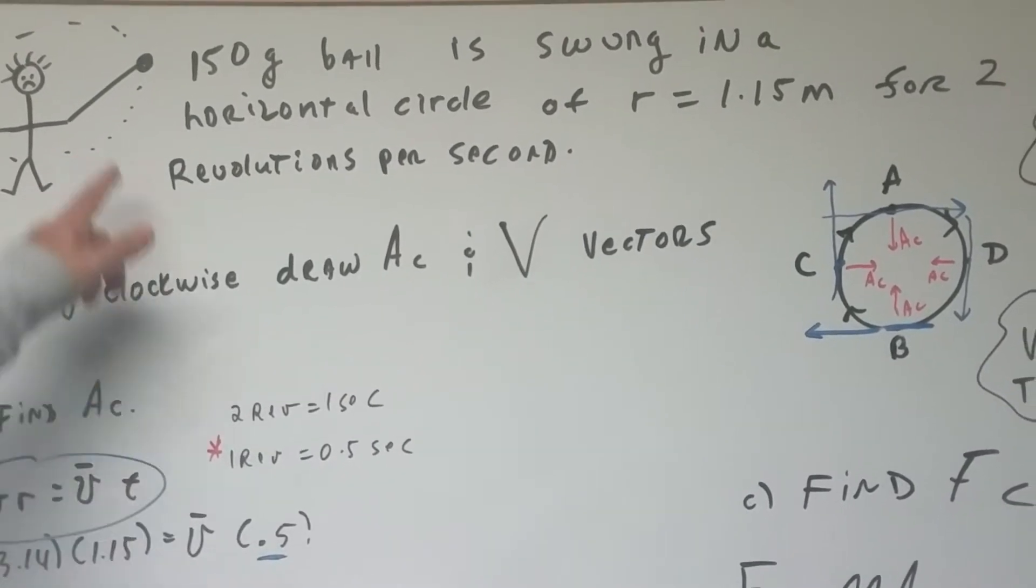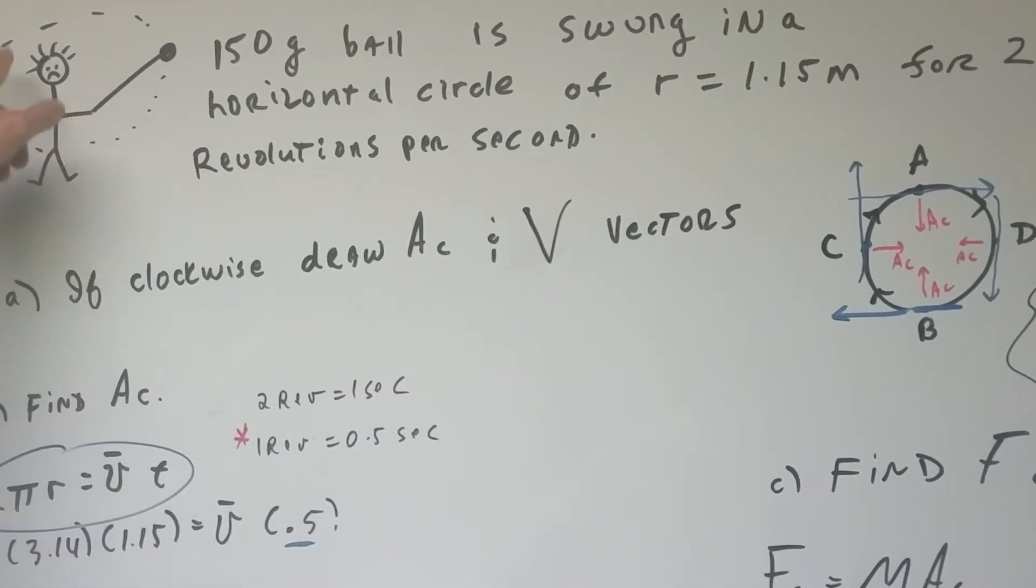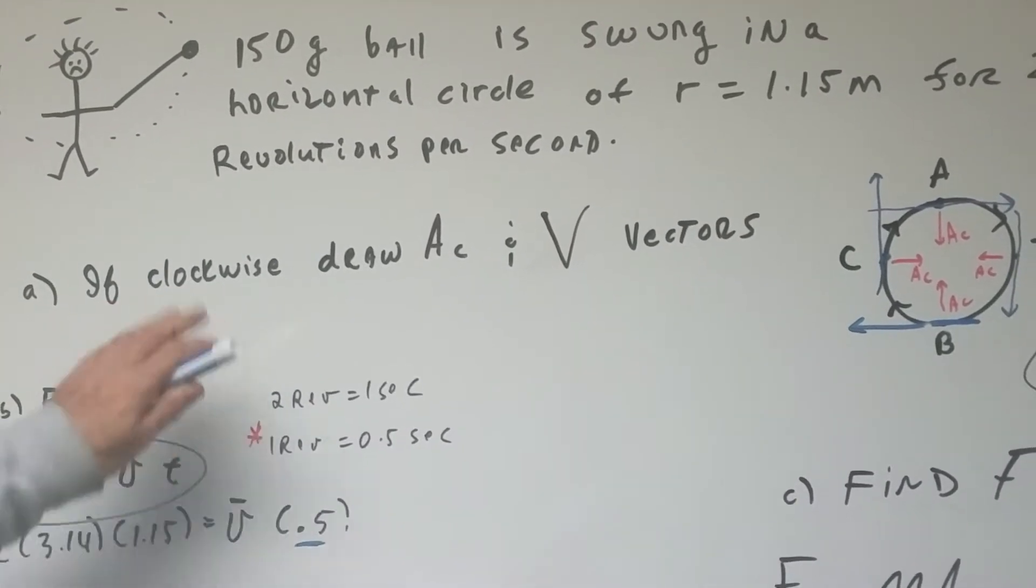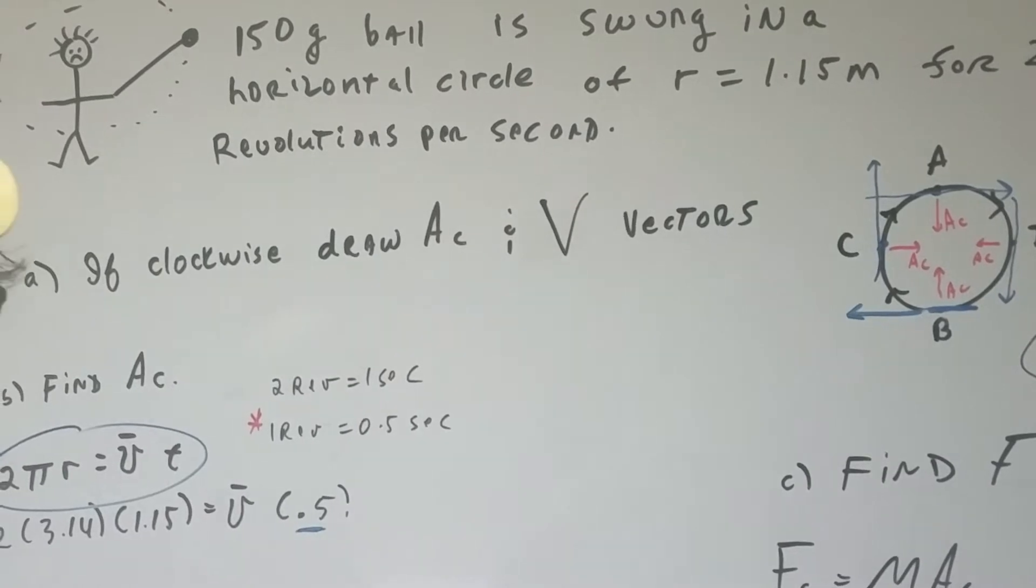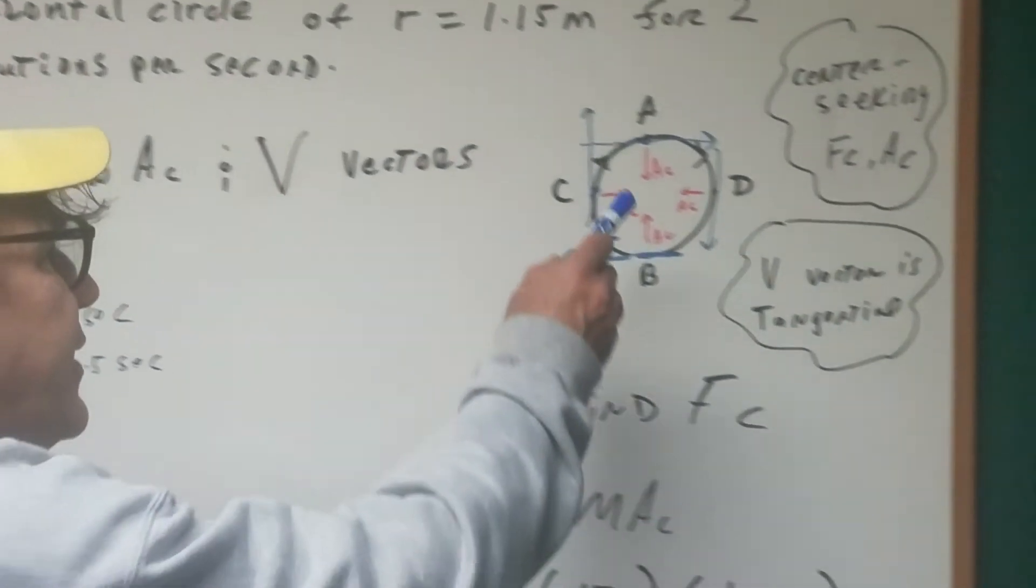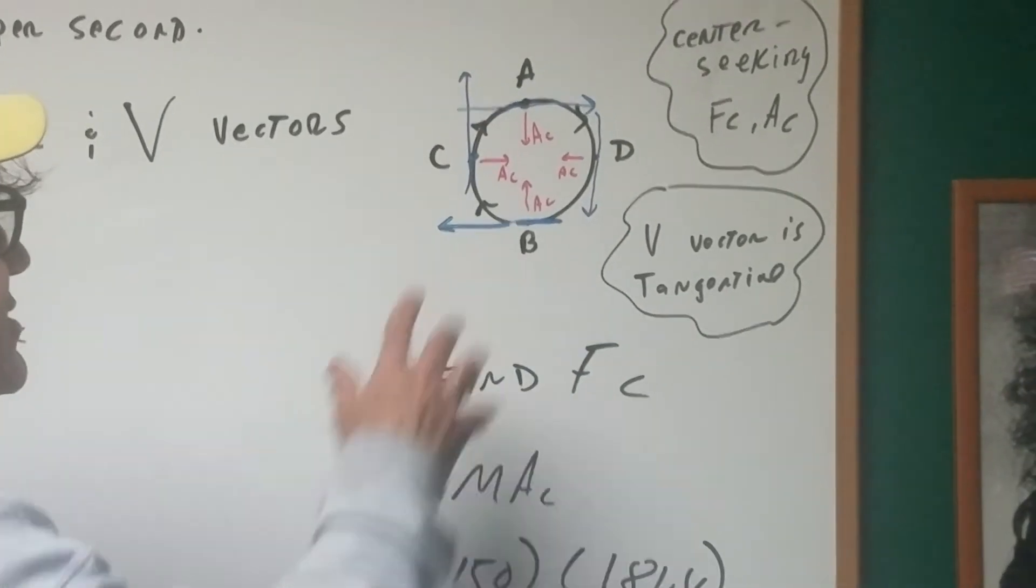So you can imagine you got this guy here and he's twirling a ball on a string. If clockwise motion is assumed, I want to draw the acceleration and the velocity vectors. What I did is I gave you this picture, so this is given.